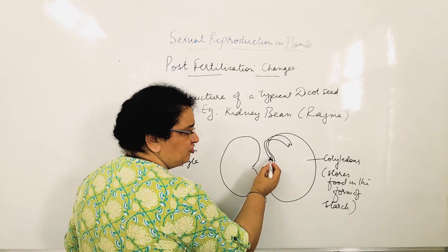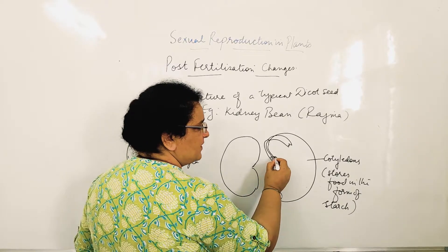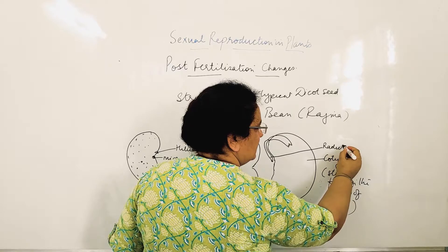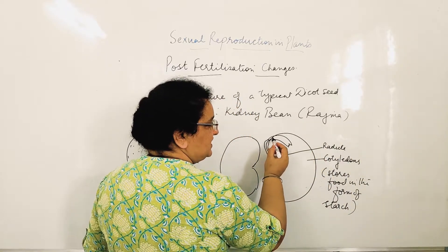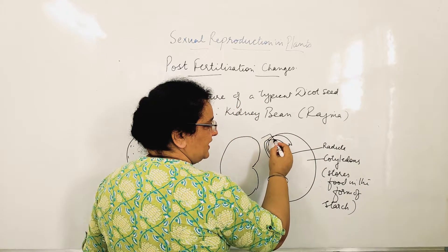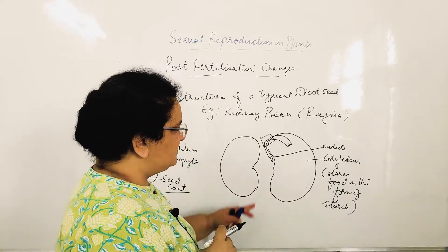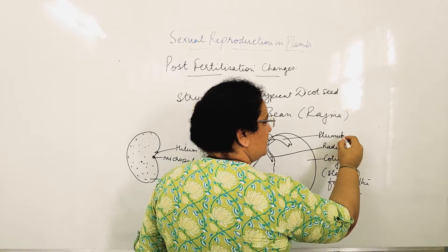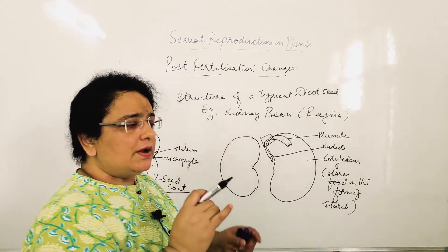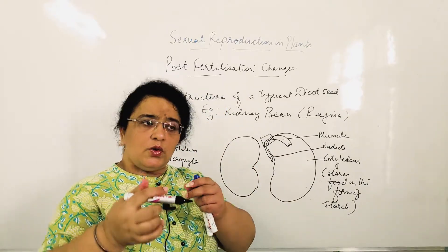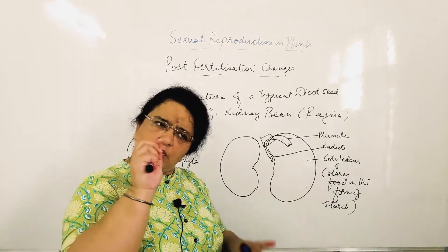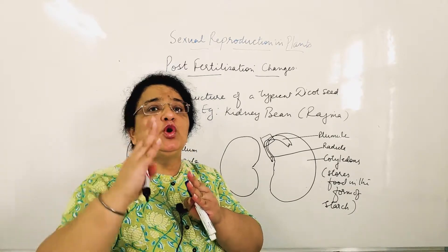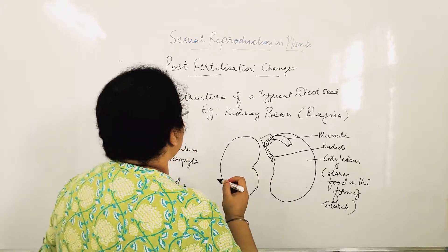The pointed portion is called the radicle. The other portion is the axis of the embryo. And the leaf-like structure is called the plumule. If you open the plumule with a needle, you will see two small folded leaves inside — they are the future shoot of the plant.